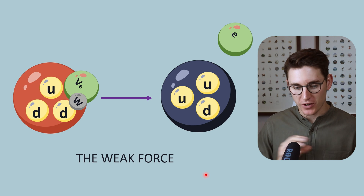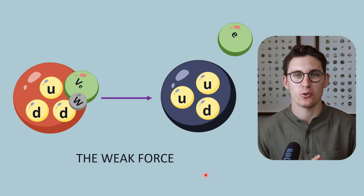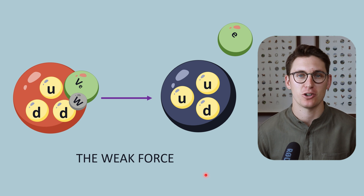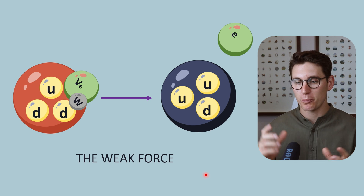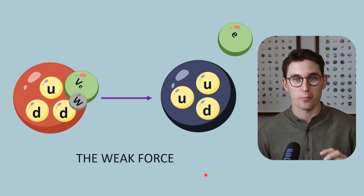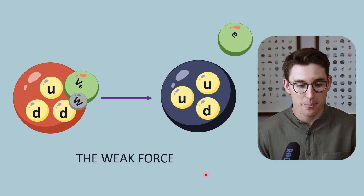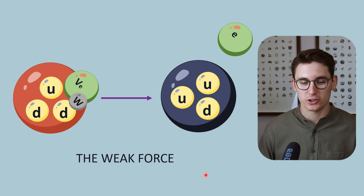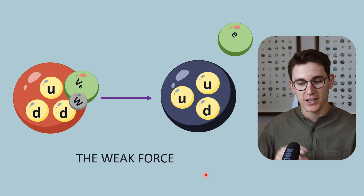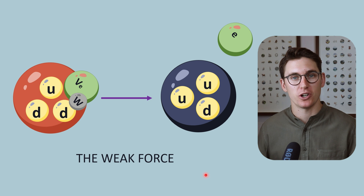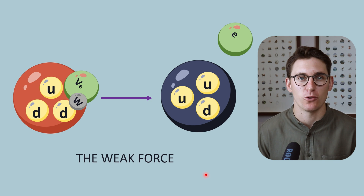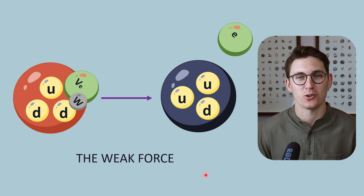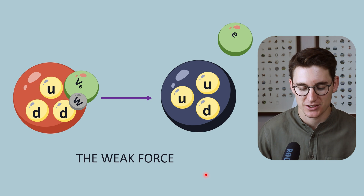We've looked at the strong force — let's move our attention now to the weak force. I'm going to show you how this force works by way of an example. The weak force is a complex force with multiple different interactions, many of which we will cover in our nuclear medicine module. Here I'm going to show you how we can change a neutron into a proton by way of the weak force, which is known as beta minus decay — a really important process when it comes to radiology physics.